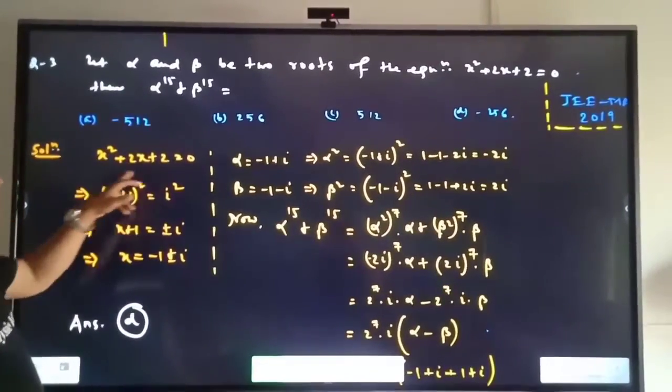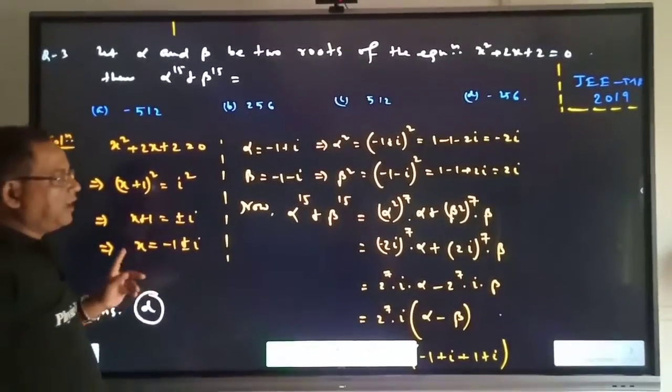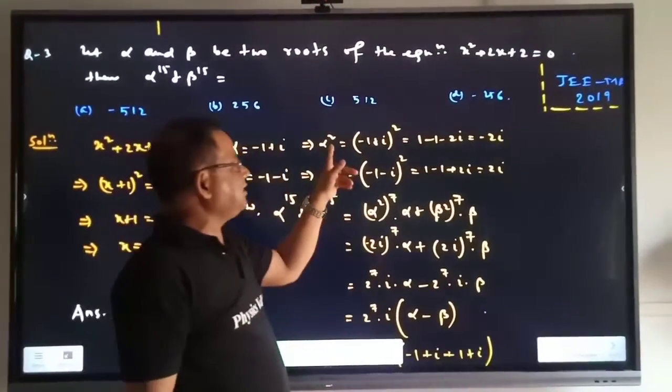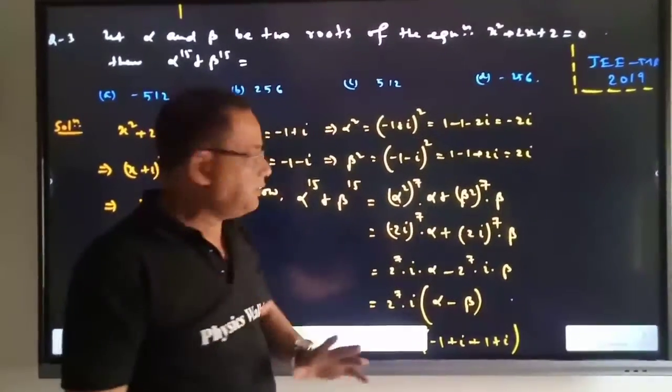We need to simplify this. For the equation, positive 1 is alpha and negative 1 is beta. Alpha is this value and beta is that value.